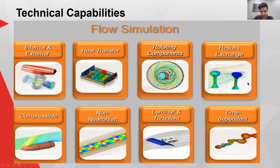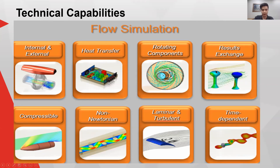There are several base capabilities: internal and external flow, heat transfer between various parts, rotational flow with a dedicated rotating region to speed up solve time, and results exchange — where you take pressure and force results from flow simulation and feed them into FEA to see stresses. Other features include compressible flow, non-Newtonian fluids, and time-dependent simulations.